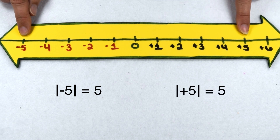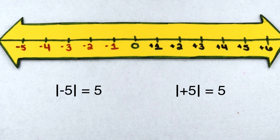Positive five is also five spaces from zero, so it would also have an absolute value of positive five. The absolute value of a number is written without a positive or a negative sign, since it just describes the distance from zero, not the direction from zero as well.